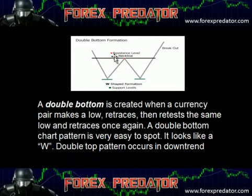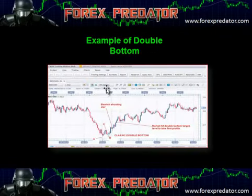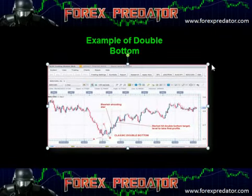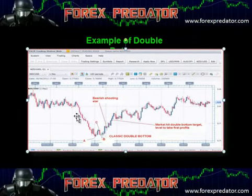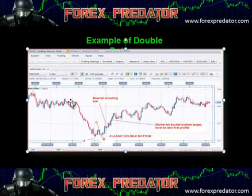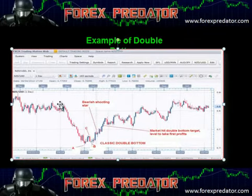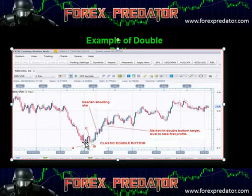A good way to look at the double bottom is to actually view it as a W — it looks like the letter W in the alphabet. And in the live example, even though this isn't the greatest example, you'll see more examples as we cover this. Basically, on a short-term price chart I've grabbed off the internet, you can see the price comes down, comes back up, comes back down, and then away we go.